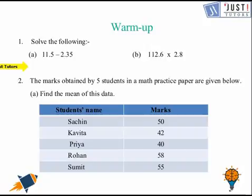Part a is 11.5 take away 2.35, so the answer for this is going to be 9.15.